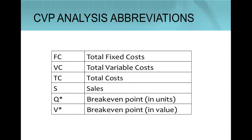Here you have all the abbreviations used in this video: total fixed costs, total variable costs, total costs, sales, break-even point in units, and break-even point in value.